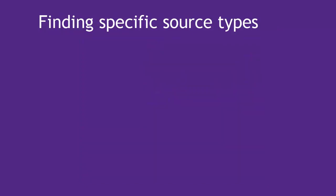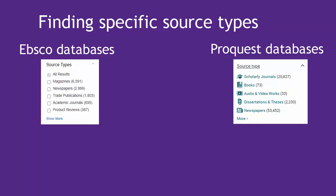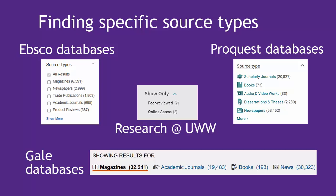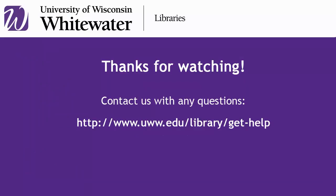Here's how to find these specific types of sources. You can limit to a certain article type by using filters in most of the library's article databases, like these examples. The type of source you will need will depend on the requirements of your assignment. Check with your professor if you're not sure what source type you should be using. Don't hesitate to contact the library with any questions — we're happy to help!